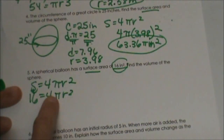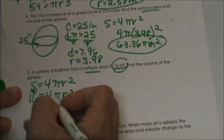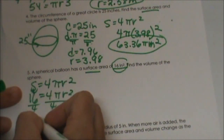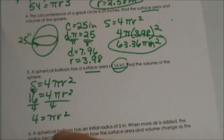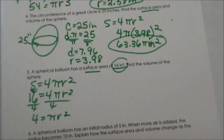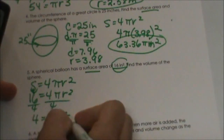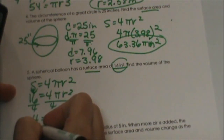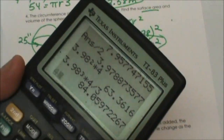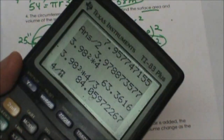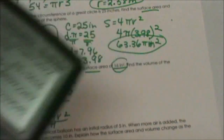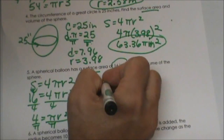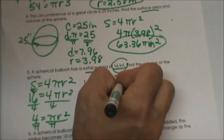So now I have to solve for r. What is my first step? Divide by 4. I have 4 equals πr². So the area of the great circle is 4, but we don't want to know that — we want the radius, so we have to keep going. Let's divide by pi. 4 divided by pi gives me 1.27. So 1.27 is equal to r squared.